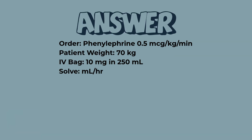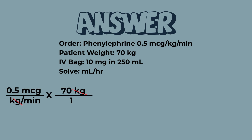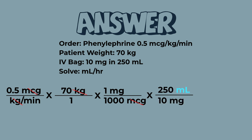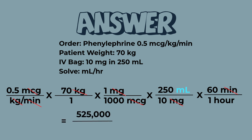Let's solve it. Start with the order, cancel out the kilograms, convert micrograms to milligrams, micrograms cancel out. Next, bring in your concentration and cancel your milligrams. Then do your time conversion — make sure to cancel your minutes. Multiply across the top, multiply across the bottom, and divide. Your final answer is 52.5 milliliters per hour. Make sure you always confirm this with pharmacy and a second RN, especially when using pressors like phenylephrine.